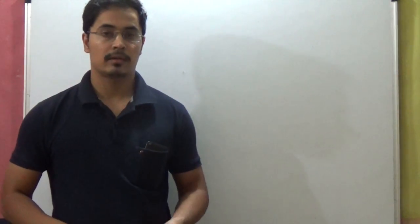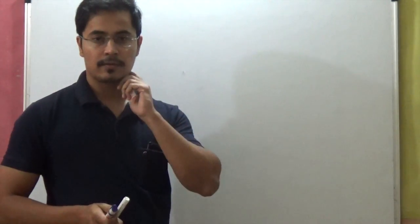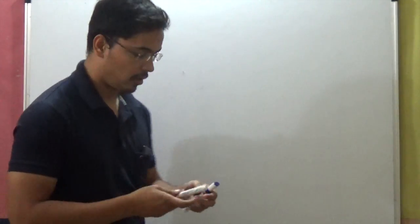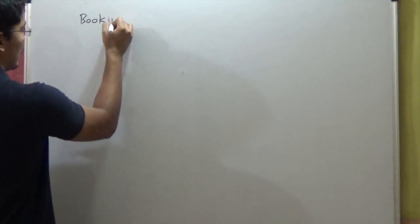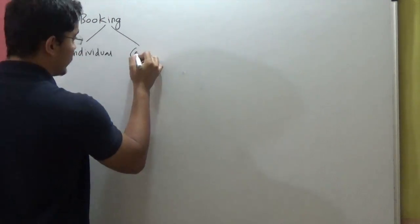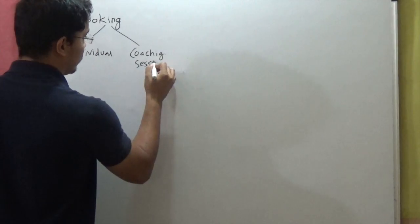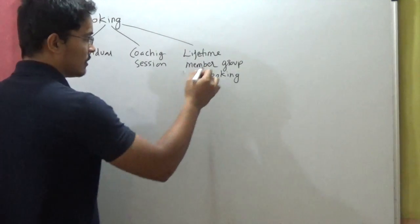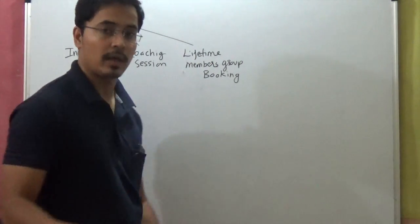We are going to create a builder which will take care of that complex logic of creating the composite complex object and isolate that logic from the client side. Let's take an example from our tennis court booking application. In the video of the decorator pattern, we gave ourselves functionality of doing different kinds of booking — a simple individual court booking, a coaching session, lifetime members, and group booking is one more type of booking that we are allowing.